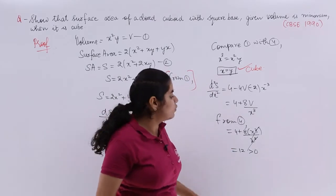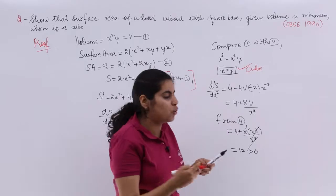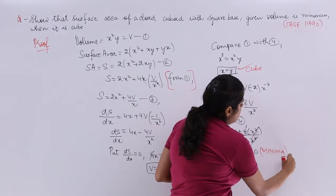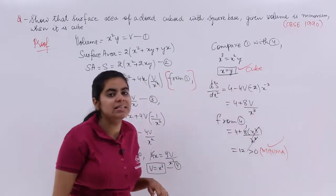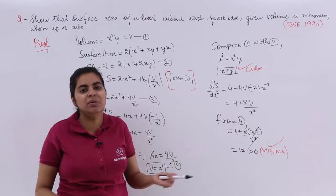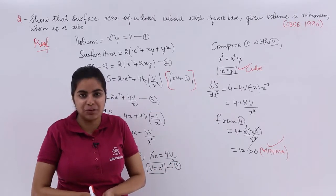So that means we have proved both the things that cube should be there, minimum area should be there, minimum surface area should be there and that is how we are going to do these kind of questions.